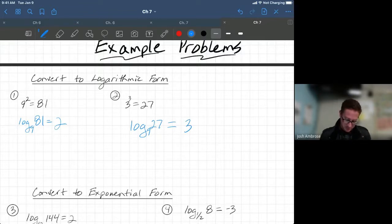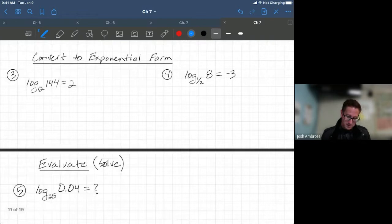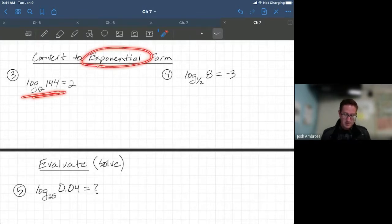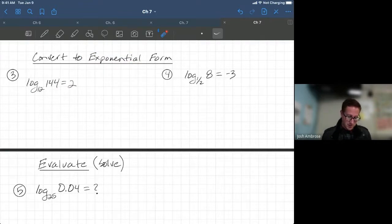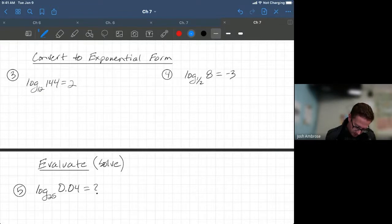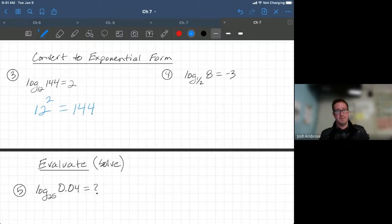Use the charts if you need that extra help. So next one, they give you logarithmic. We're converting to exponential. Okay? This one might come a little bit more natural. Okay? So, this becomes 12 squared equals 144.